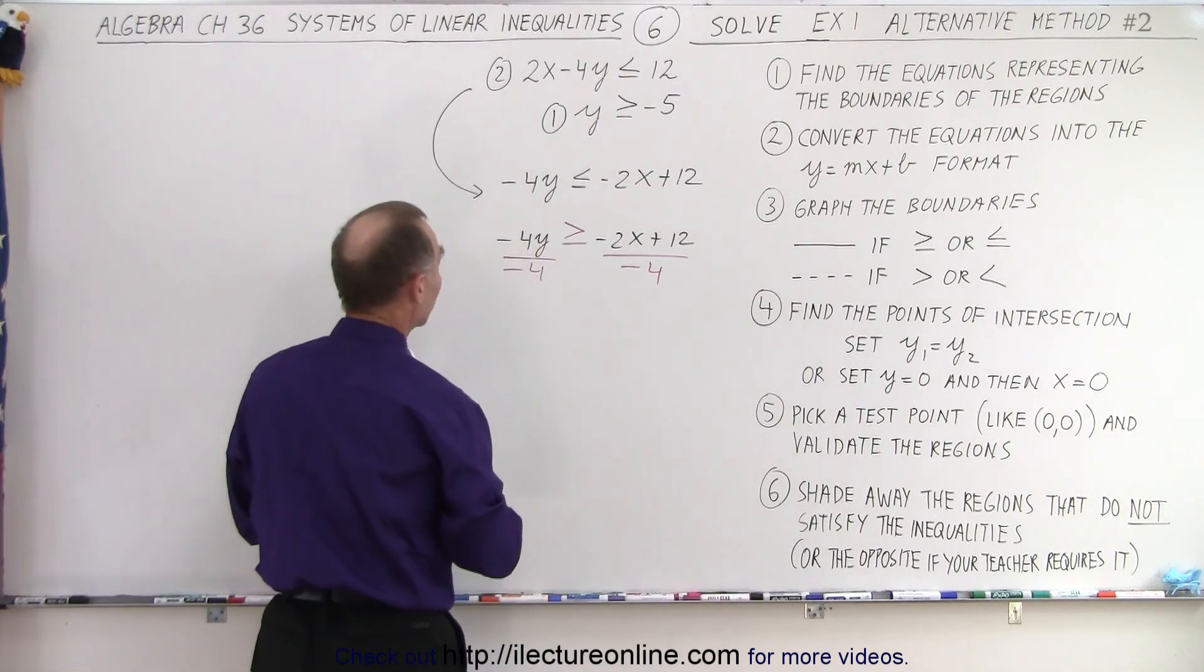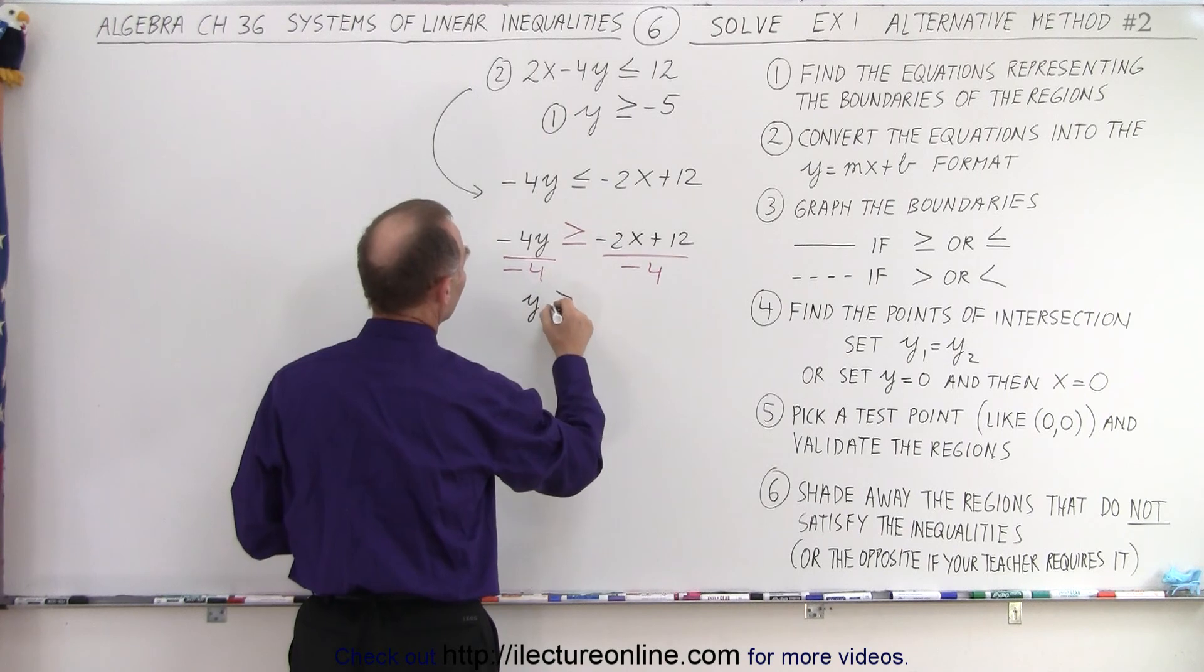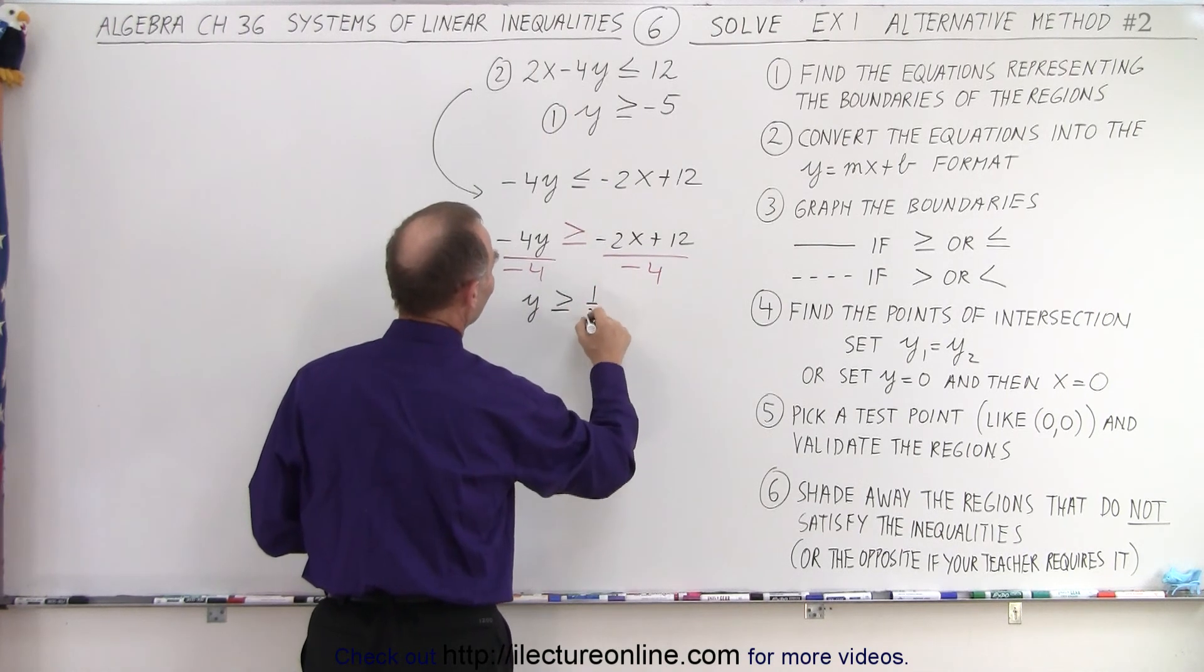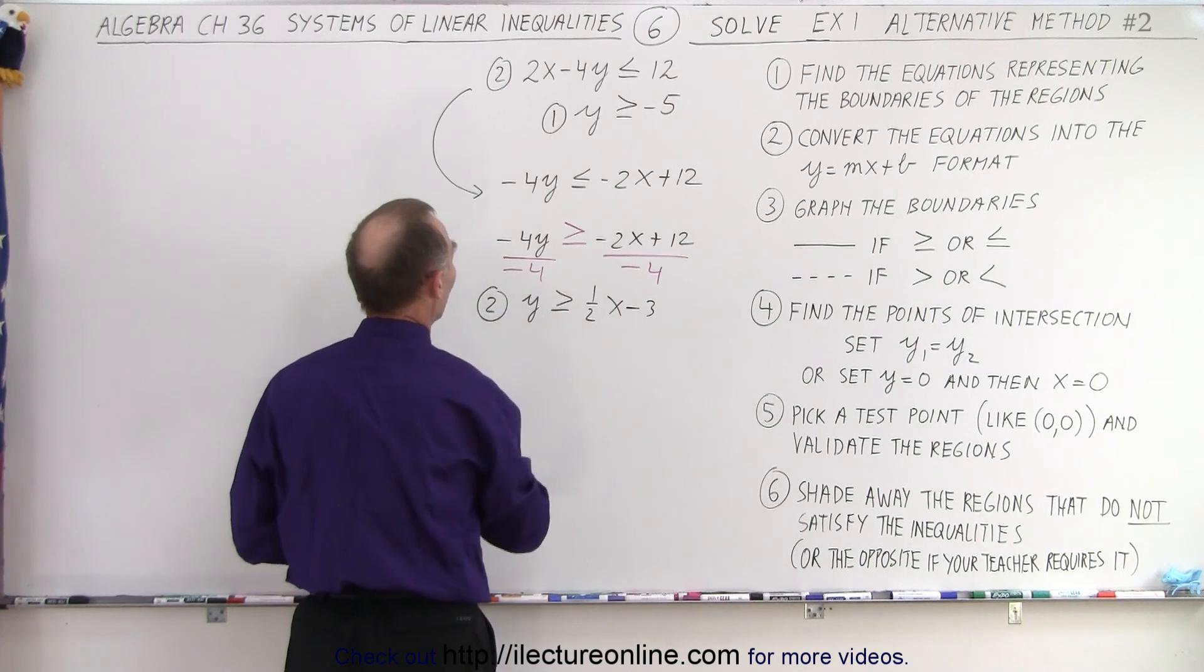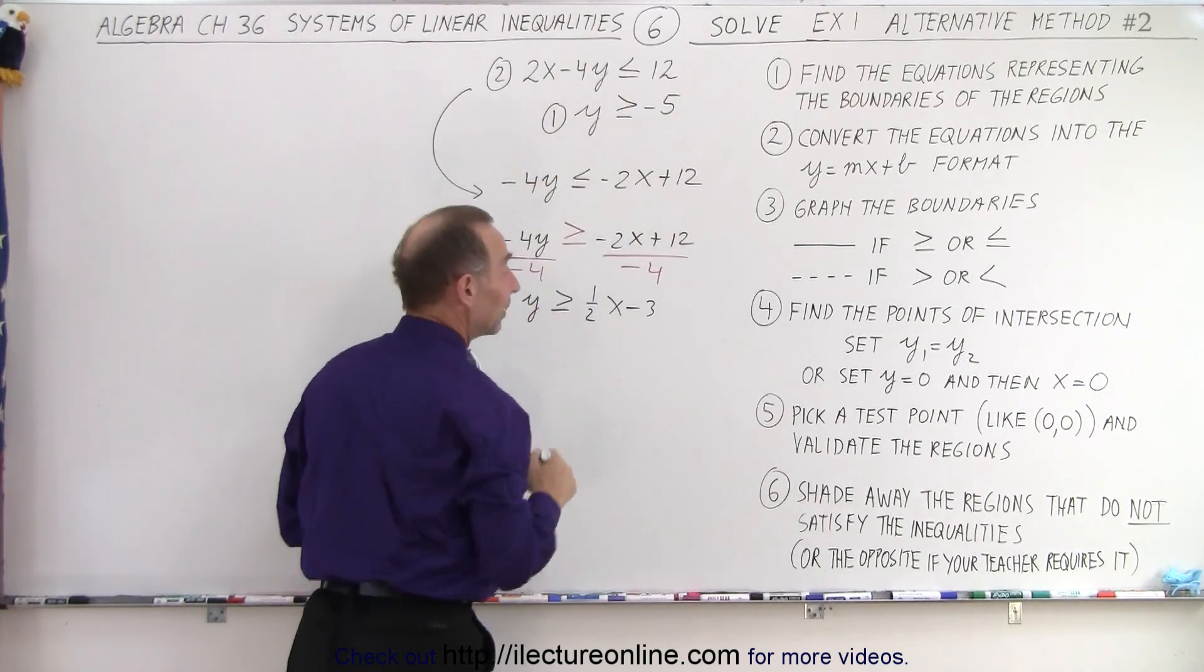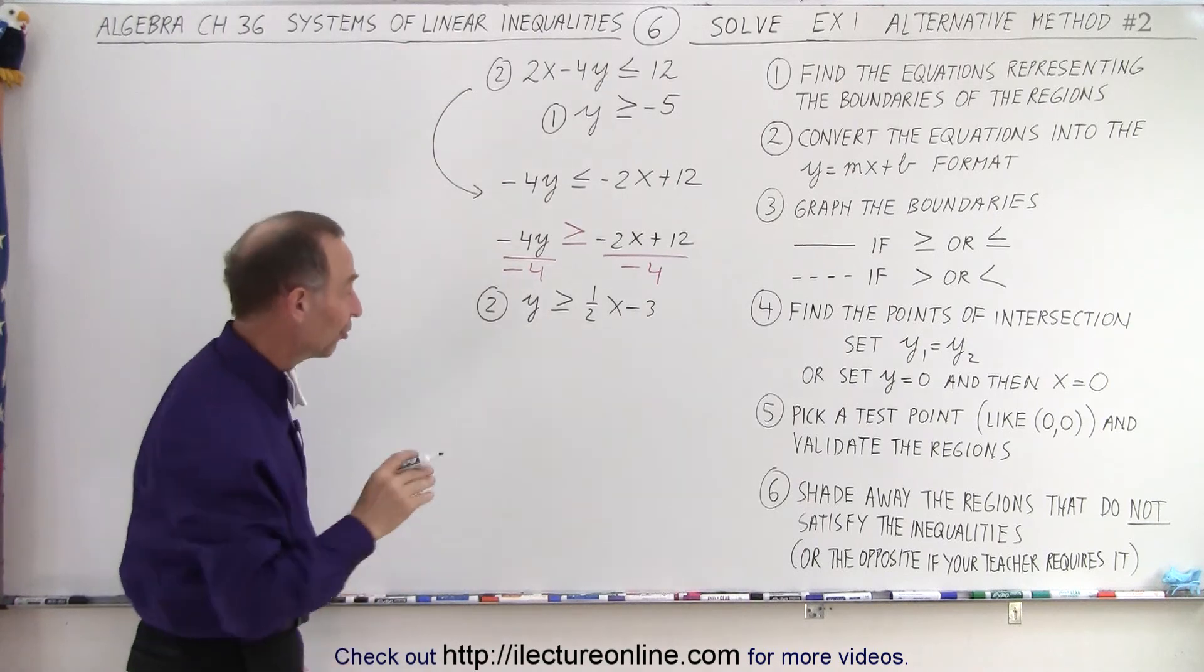When we simplify this, we get y ≥ ½x - 3, and that's our second inequality. So we have our first inequality and our second inequality. Now we're ready to graph it and solve it.